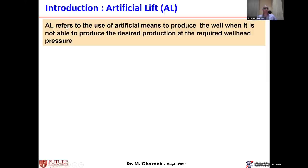Then, if you want to define artificial lift — what does it mean — artificial lift refers to the use of artificial means to create sufficient bottom hole flow pressure able to lift the flow to the surface with the required wellhead pressure. It is required when the well is not able to produce the desired production at the required wellhead pressure.